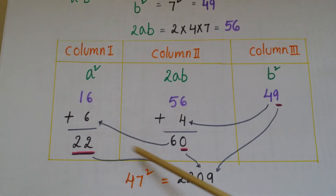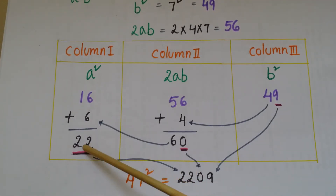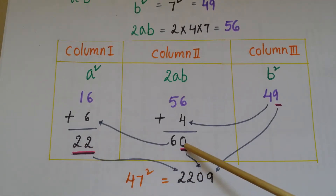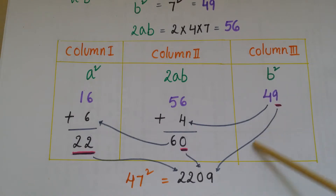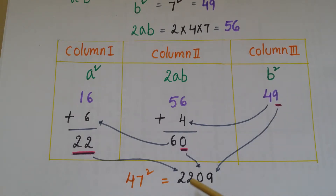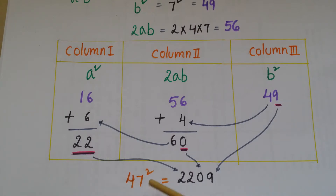Write these underlined values together: 22 from Column 1, the units digit 0 from Column 2, and the units digit 9 from Column 3. So the final value of 47² is equal to 2209.